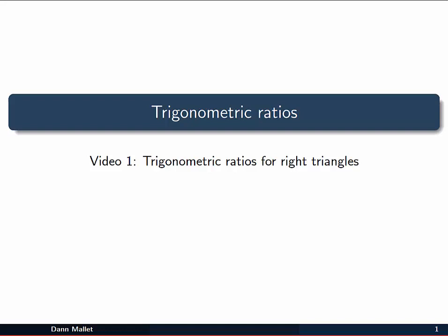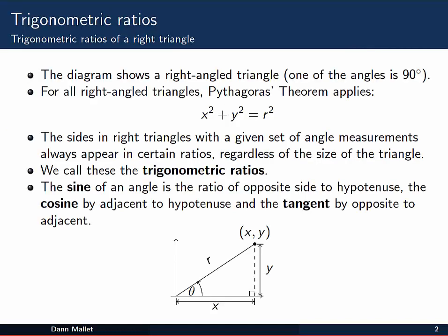This video looks at the trigonometric ratios for right angle triangles. In the diagram at the bottom of the slide, we have a right angle triangle that's been drawn on top of a horizontal and a vertical axis. You can see that one of the angles down here is a 90 degree angle, making it a right triangle.